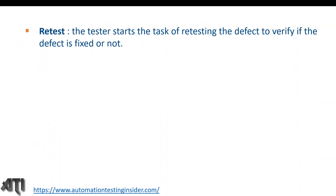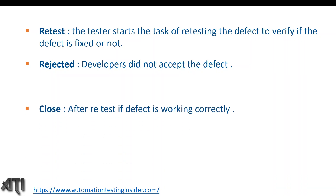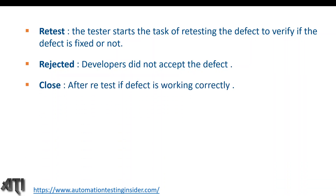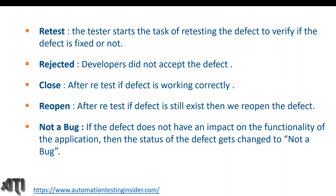'Retest' — the tester starts retesting the defect to verify if it is fixed or not. 'Rejected' — the developer did not accept the defect. 'Close' — after retest, if the defect is working correctly, the status is 'Close'. 'Reopen' — after retest, if the defect still exists, we reopen it. And 'Not a Bug' — if the defect does not have an impact on the functionality of the application, the status is changed to 'Not a Bug'.